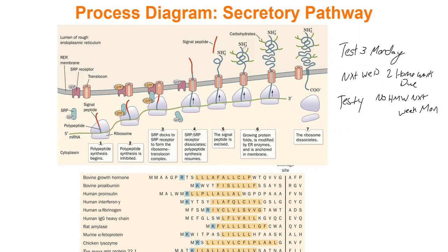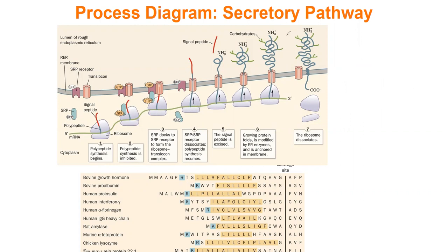Those are just some general announcements. The topic we've really been focusing on lately is the membrane of the cell — we talked about the fluid mosaic model and all the different components of it, including the proteins in the membrane. The next thing we're going to talk about is how integral membrane proteins actually end up in the plasma membrane. An integral membrane protein goes all the way through the membrane and cannot function without being in the membrane — so the question is, how does it get there in the first place?